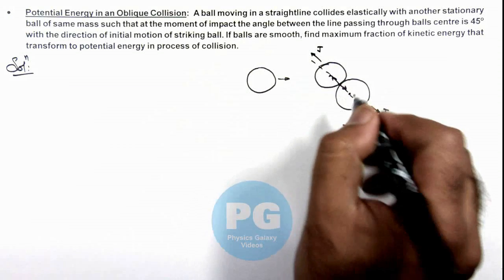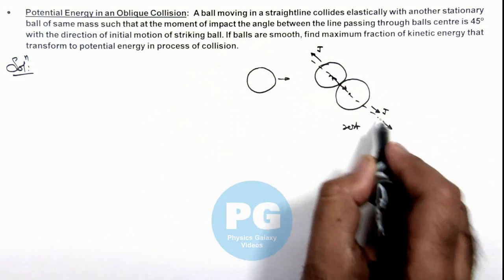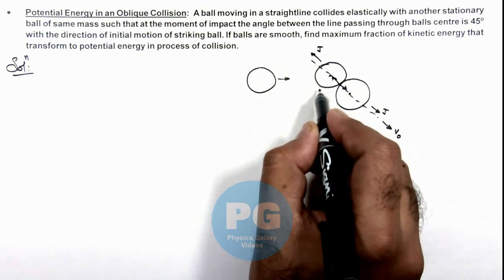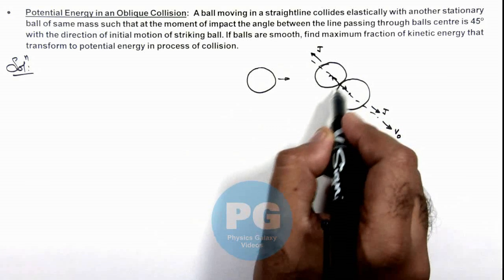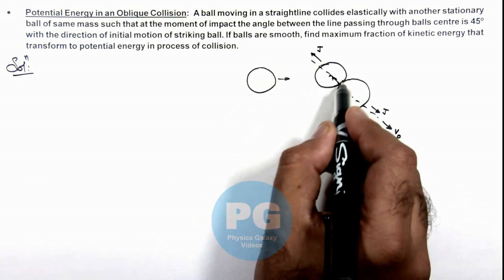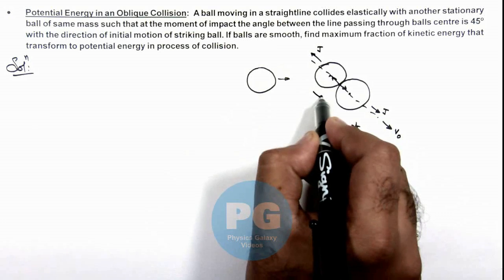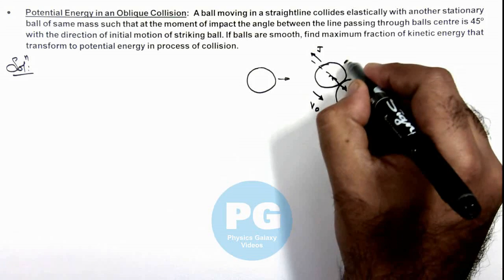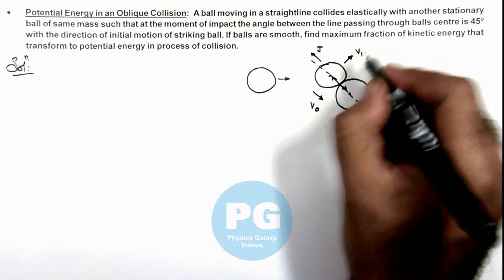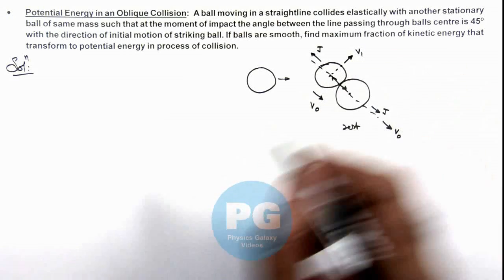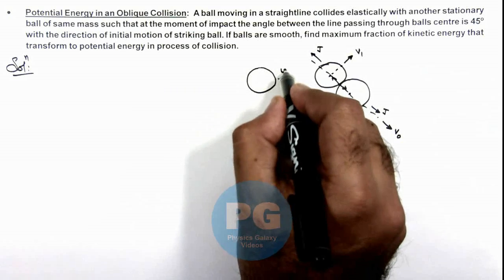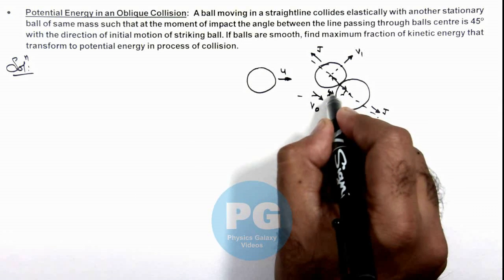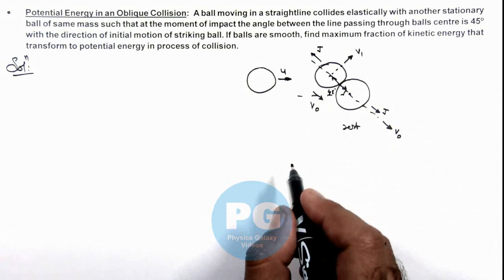If this ball starts moving with velocity v₀, then along the line of motion, we know that at the point of maximum deformation between the two balls, both are moving with the same velocity v₀. This ball also has a velocity v₁ in the direction perpendicular to the line of impact. The initial velocity of the striking ball is u, and we are given that the angle is 45 degrees with the initial direction of motion.